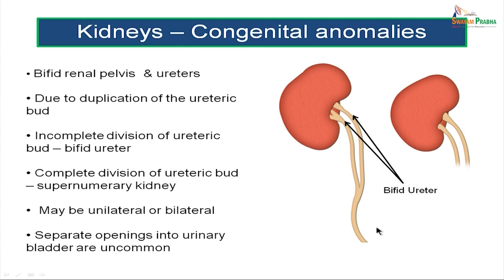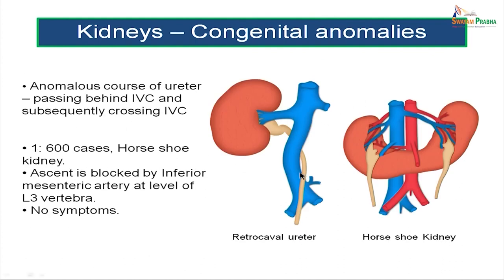One common congenital anomaly is a bifid renal pelvis and bifid ureters, usually due to duplication of the ureteric bud originating from the mesonephric duct. An incomplete division of the ureteric bud leads to a bifid ureter, and a complete division leads to a supernumerary kidney. This condition may be unilateral or bilateral, and separate openings into the urinary bladder are very uncommon. There is also a retrocaval ureter, where the ureter passes behind the inferior vena cava, loops around it, and then comes down into the pelvis crossing the IVC on its anterior aspect.